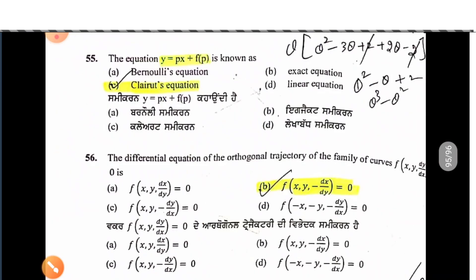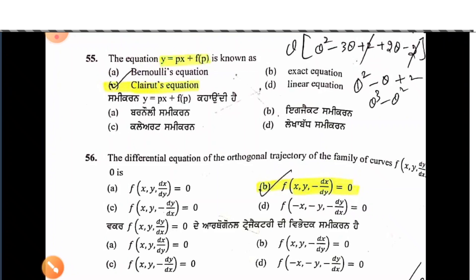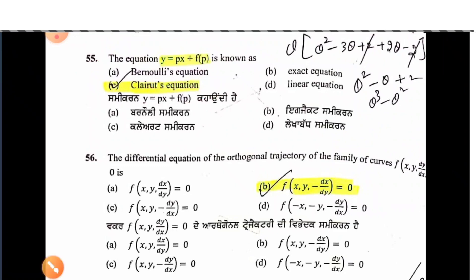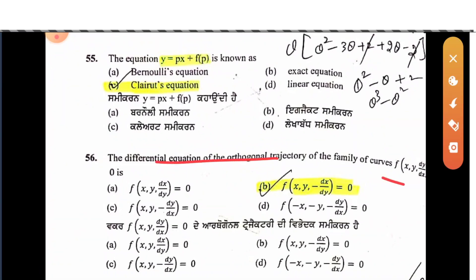Now let's see a question from the master grader. The Clairaut equation is y = px + f(p), which is a first-order, higher-degree differential equation (degree greater than 1). For its orthogonal trajectory, we simply apply the same rule: replace dy/dx with -dx/dy. That is simple and gives the equation of the orthogonal trajectory directly.